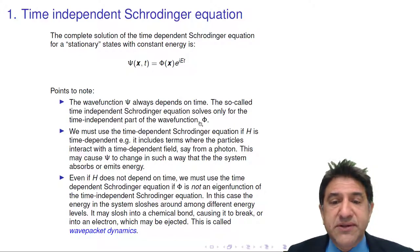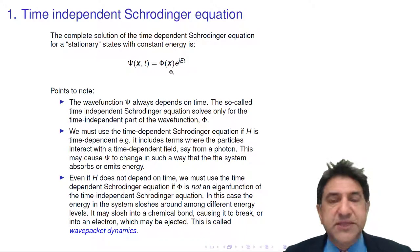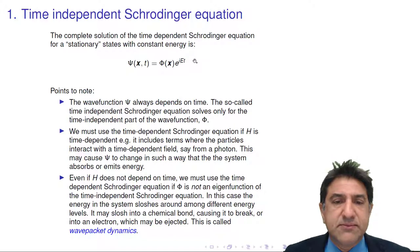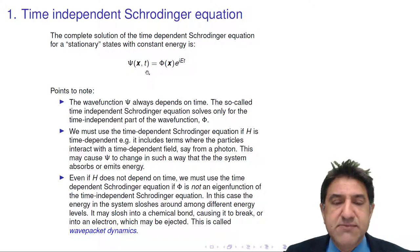However, if the Hamiltonian does depend on time—for example, it includes terms involving an oscillating electric field, maybe coming from a photon—then we can't use this procedure. We have to solve the full time-dependent Schrodinger equation. So that's basically it. And in that case, the time-dependent wave function will change in shape over time. And if you look on Google, you can see some of these pictures of the wave function changing in time. It's essentially showing how the energy, or the probability density of the particles, shifts as a function of time. And we call that wave packet dynamics.